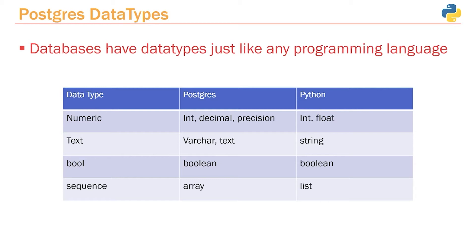For Booleans, both Postgres and Python support them and they work the same way — it's either true or false. Within Python we have lists for modeling multiple instances. In Postgres we have arrays. You'll find that arrays aren't used very much in relational databases, because a lot of times if you're using an array, it may be better to take that column and convert it into its own table. We'll go over that in some upcoming lectures.